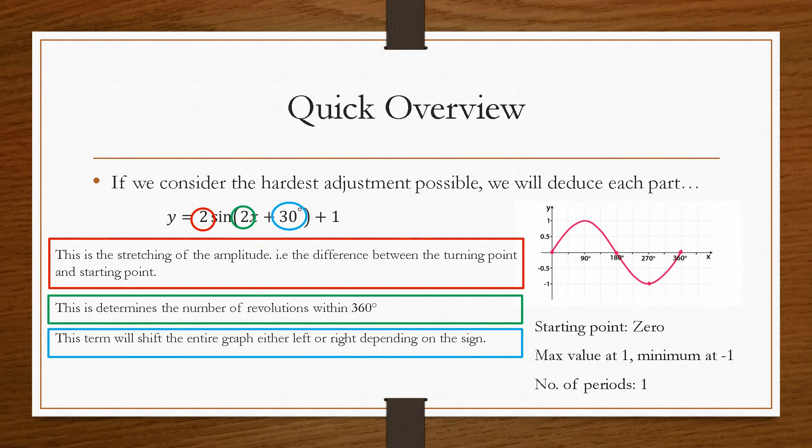Now a plus or minus inside the bracket will have an effect on the x-axis only, because the x-axis is in degrees. So this is plus or minus 30 degrees. Now this will shift the entire graph either left or right, depending on the sign. And the clue is, if it is plus, it will shift to the right, and if it is negative, it will shift to the left.